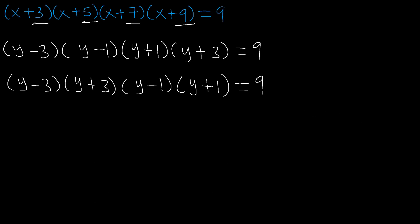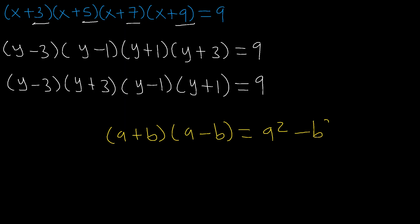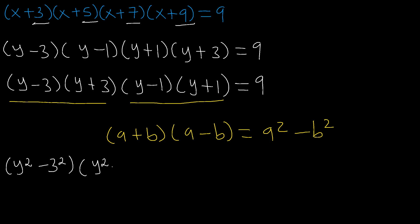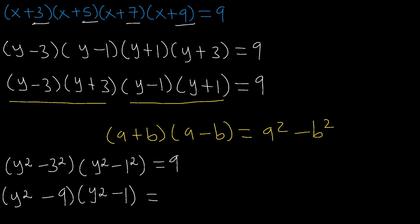Now, from the difference of two squares, we know that (a plus b) times (a minus b) equals a squared minus b squared. Therefore, we can express these pairs in the same way. So we shall have (y squared minus 9) times (y squared minus 1) equaling to 9. And this gives us y squared minus 9 times y squared minus 1, equal to 9.